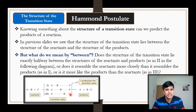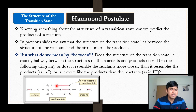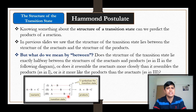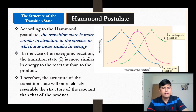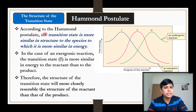Or does the transition state resemble the products more than the reactants, as in case three? So the transition state will either lie exactly between reactants and products, be more closer to the reactant side, or be more closer to the product side. This is what we have to determine from the Hammond Postulate.